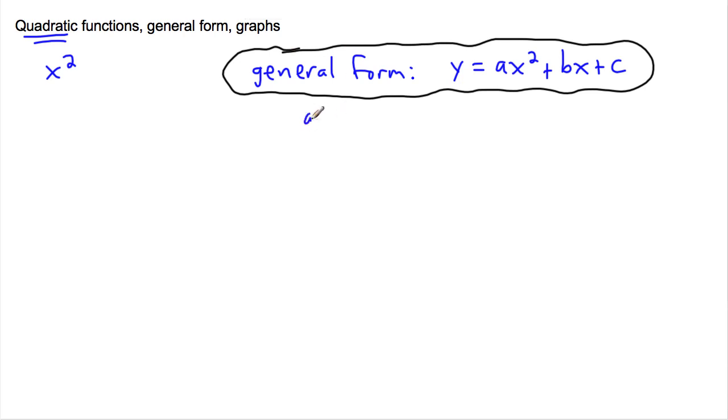What I mean by this is that a, b, and c are just numbers. In other words, they're just constants, but you have to have an x squared happening.